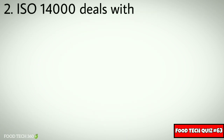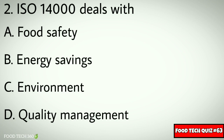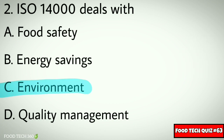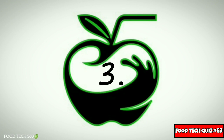Question No. 2. ISO 14000 deals with: Options: A. Food Safety, B. Energy Savings, C. Environment, D. Quality Management. Correct answer: C. Environment.